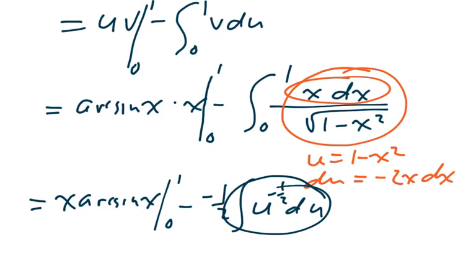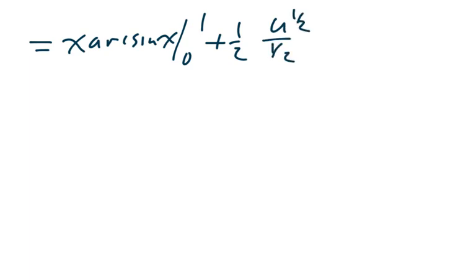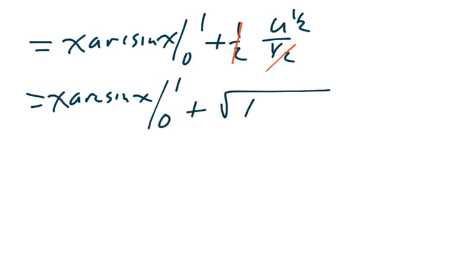That winds up being u to the positive 1/2 divided by 1/2. So this becomes our integral is x arc sine x from 0 to 1 plus, it was minus a negative, 1/2 u to the 1/2 over 1/2 from the anti-derivative. These will cancel. And so we get x arc sine x from 0 to 1 plus square root of 1 minus x squared from 0 to 1.